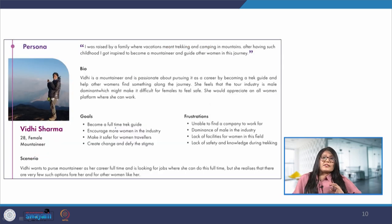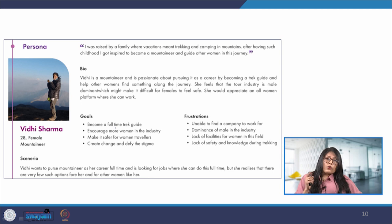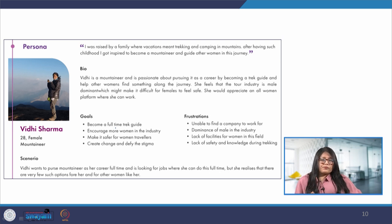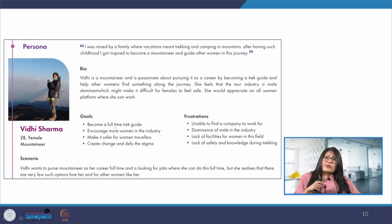A good persona is one that supports the kind of reasoning that asks: what would the user do in this situation with the product, and how would the user respond if the product behaves in a particular manner? But a good persona can be challenging to develop. The kind of information included needs to be pertinent to the product being developed. For example, for a mountaineer, the persona would focus on travel-related behavior and attitude, rather than, say, the magazine the persona reads or where they buy their clothes. But if we are designing for a shopping center navigation system, those other two aspects may be useful.